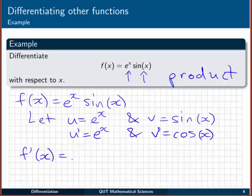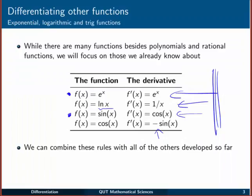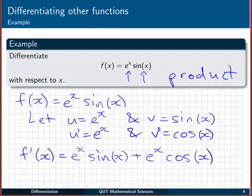So our product rule then says that f dashed of x is v times u dash, which is sin x times e to the x, e to the x sin x. Just writing it in the same order. And then plus u times v dash. So u is e to the x and v dash is cos x. So there's our derivative using the product rule and our new rules for differentiating exponential and trig functions.